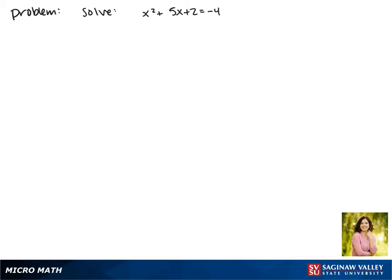Today we'll be solving the equation x squared plus 5x plus 2 equals negative 4. We'll be doing this by completing the square.